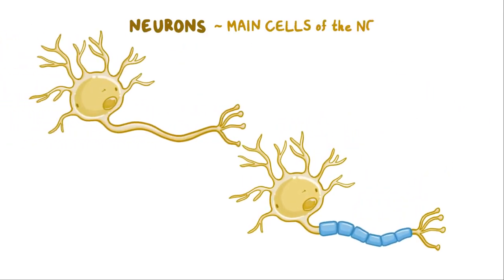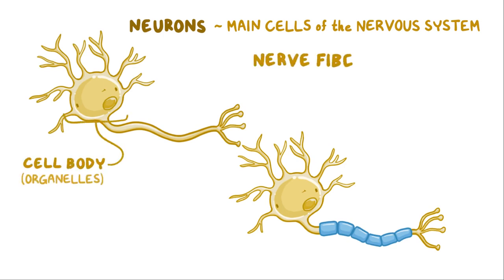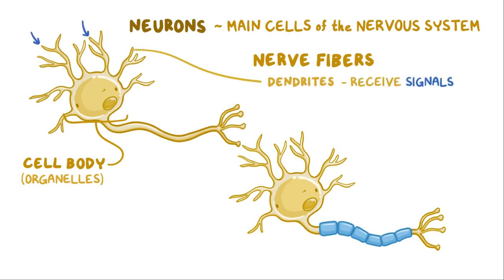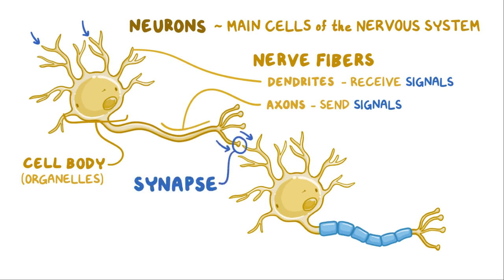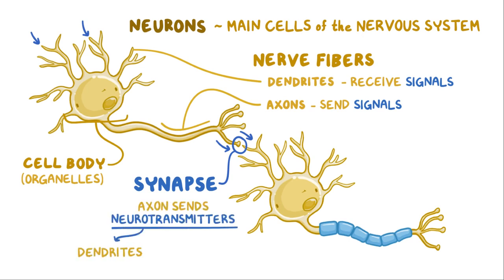Neurons are the main cells of the nervous system. They're composed of a cell body, which contains all of the cell's organelles, and nerve fibers, which are projections that extend out from the neuron cell body. Nerve fibers are either dendrites that receive signals from other neurons, or axons that send signals along to other neurons. Where two neurons come together is called a synapse, and that's where one end of an axon sends neurotransmitters to the dendrites or directly to the cell body of the next neuron in the series.